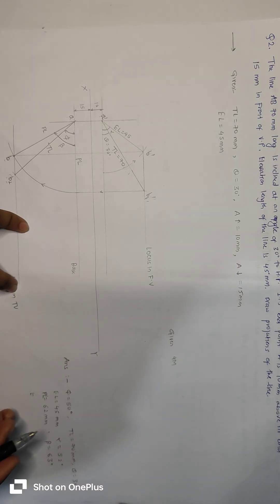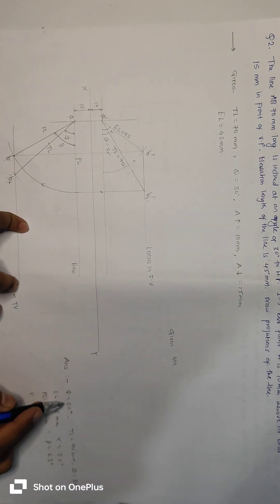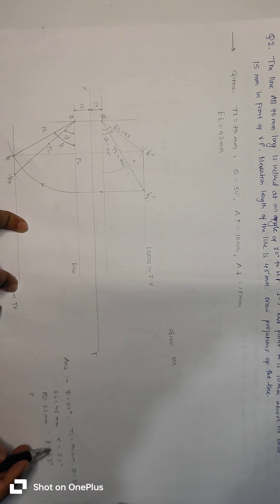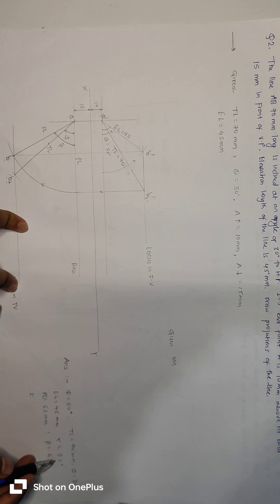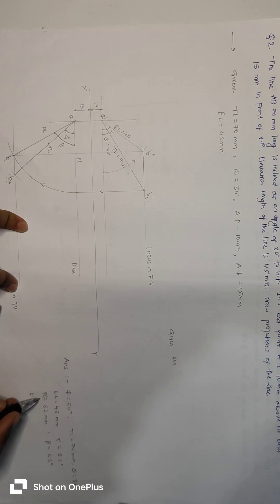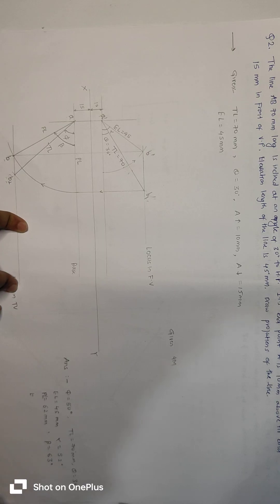The answers for question two are: I is equal to 50 degrees, alpha is equal to 52 degrees, plan length is equal to 62 mm, and beta is equal to 63 degrees.